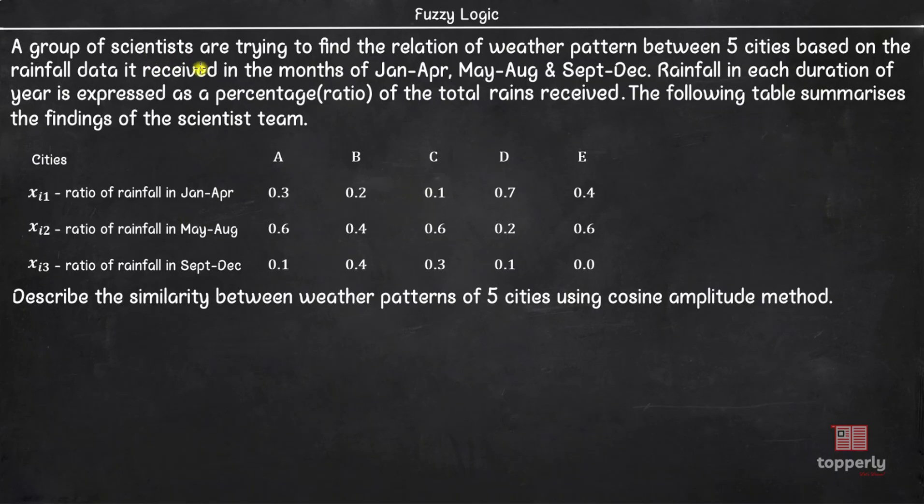A group of scientists are trying to find the relation of weather pattern between 5 cities based on the rainfall data it received in the months of January to April, May to August and September to December. Rainfall in each duration of year is expressed as a percentage or ratio of the total rains received in the year. And this table summarizes the findings of the scientist team.